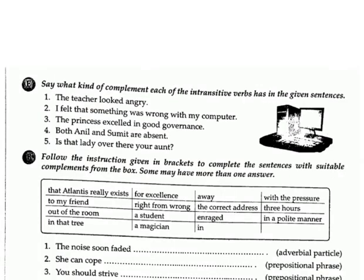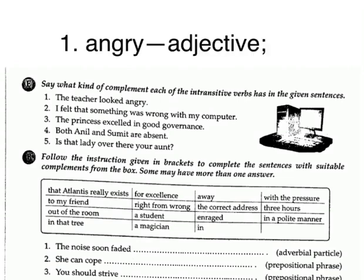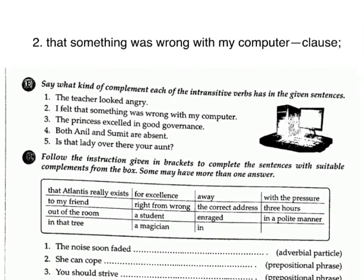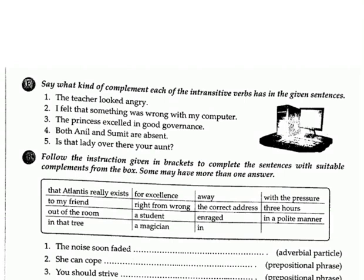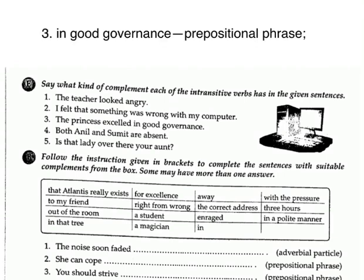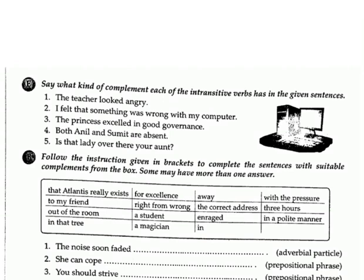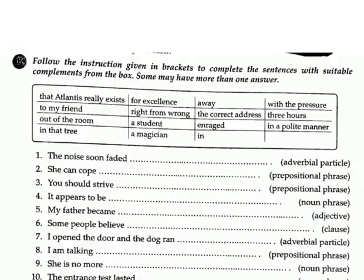Exercise E: Say what kind of complement each of the intransitive verbs has in the given sentences. 1. The teacher looked angry. Answer: angry — adjective. 2. I felt that something was wrong with my computer. Answer: that something was wrong with my computer — clause. 3. The princess excelled in good governance. Answer: in good governance — prepositional phrase. 4. Both Annal and Sumit are absent. Answer: absent — adjective. 5. Is that lady over there your aunt? Answer: your aunt — noun phrase.